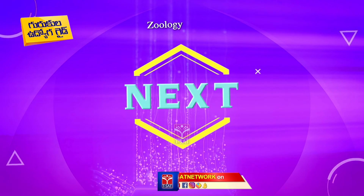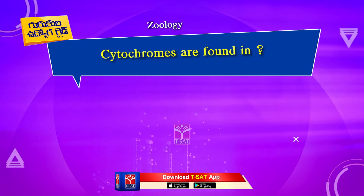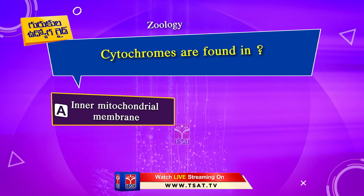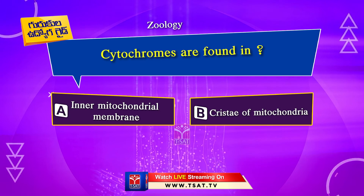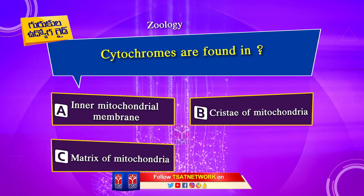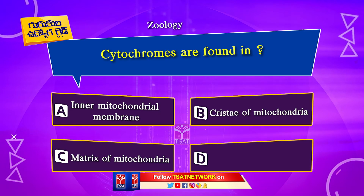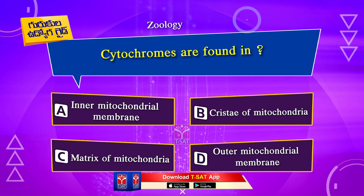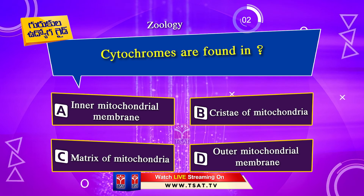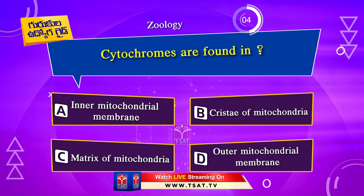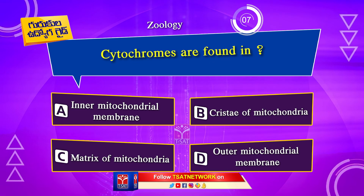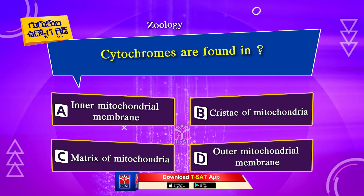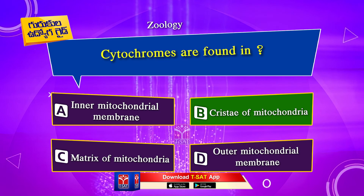Next question. Cytochromes are found in: Option A. Inner mitochondrial membrane. Option B. Cristae of mitochondria. Option C. Matrix of mitochondria. Option D. Outer mitochondrial membrane. The correct answer is Option B. Cristae of mitochondria.